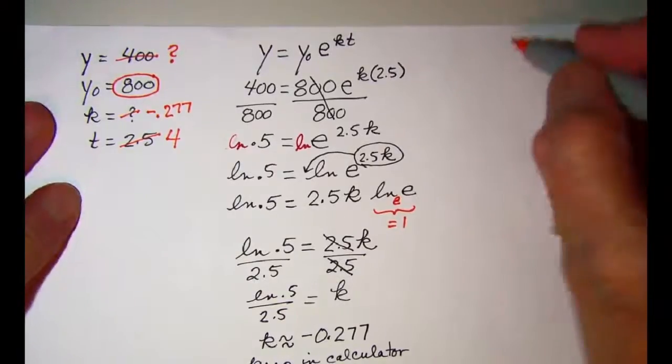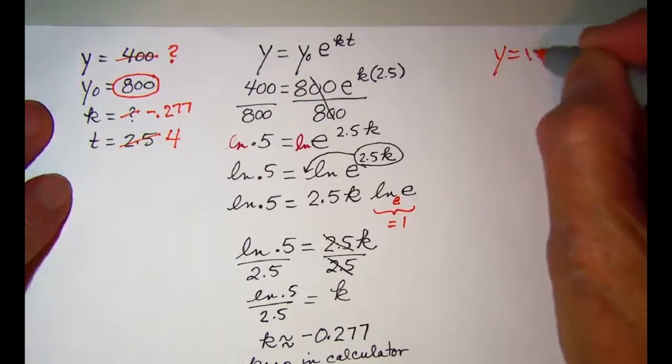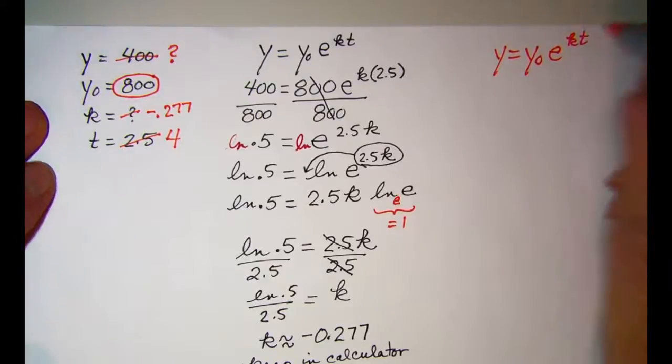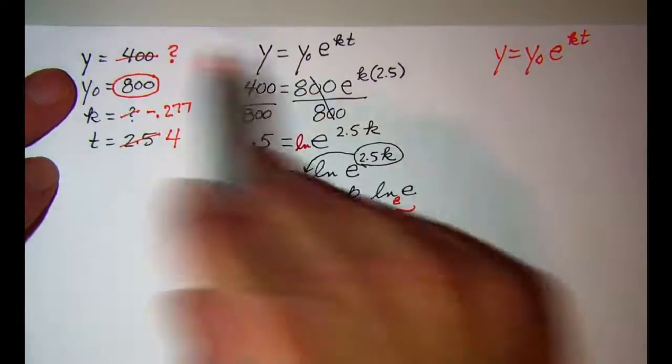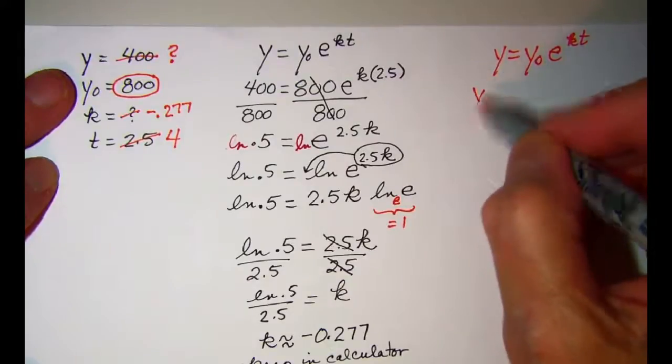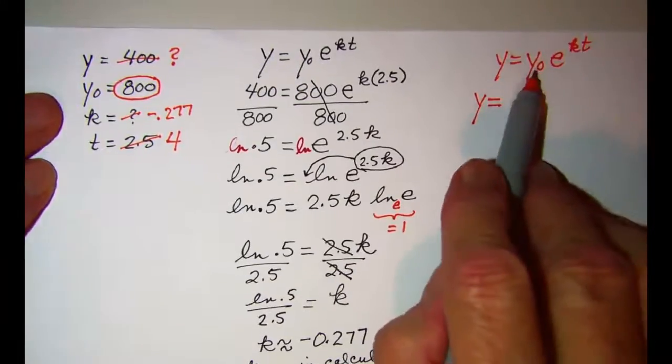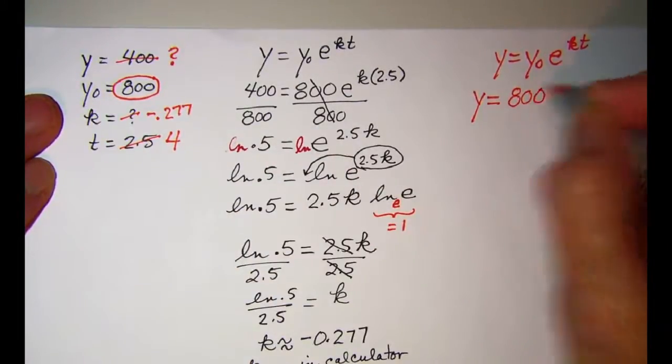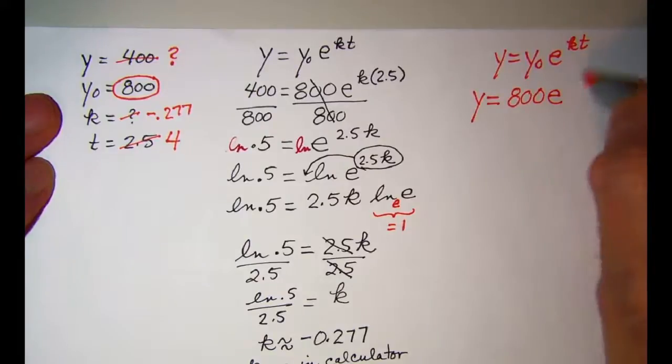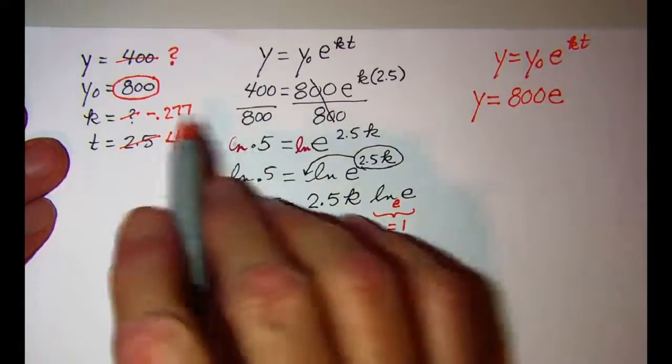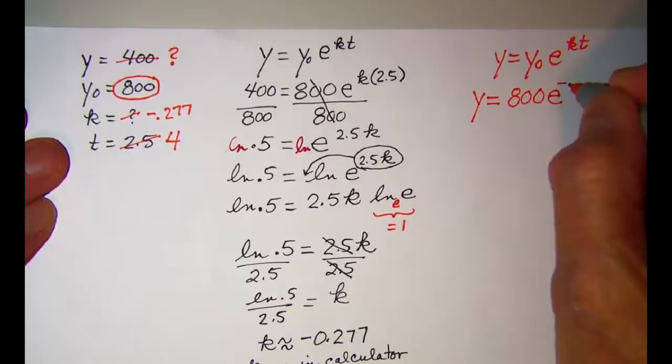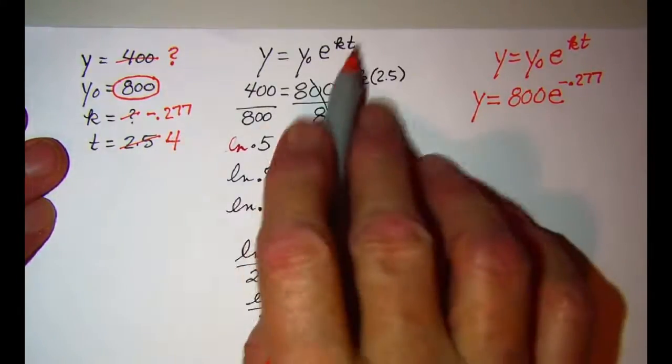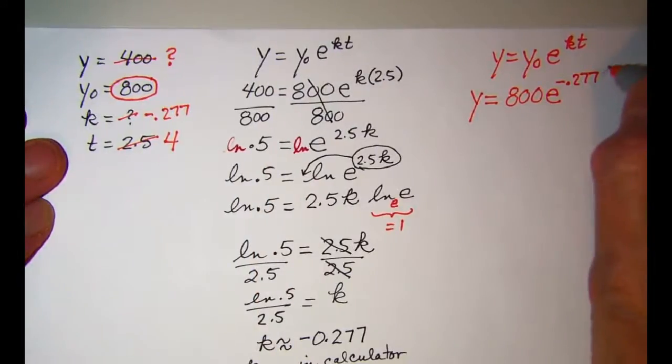So our equation then y equals y sub zero e to the kt. My y is what I'm looking for so I'll leave that as y. My y sub zero is 800 e raised to the k is negative 0.277 times t which is 4.